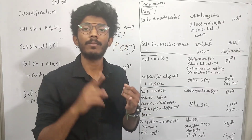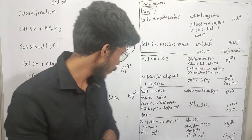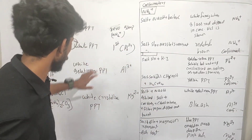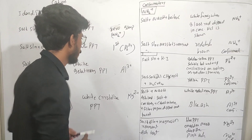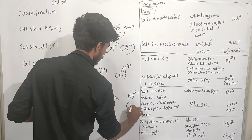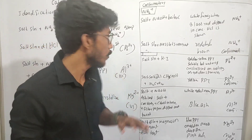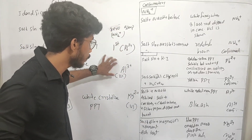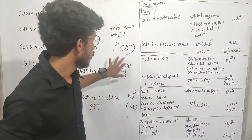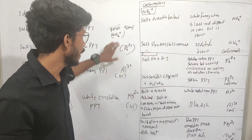We have to study cation groups: 1st, 2nd, 3rd, 4th, 5th, and 6th groups. But in this video, we have to study 4 groups — group 0, group 1, group 3, and group 6. We have 4 groups in cation.